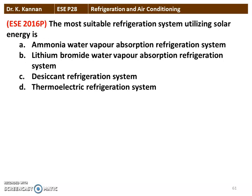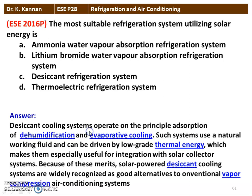Next question: The most suitable refrigeration system utilizing solar energy is — ammonia-water vapor absorption, lithium bromide-water vapor absorption, desiccant refrigeration, or thermoelectric refrigeration? The correct answer is the desiccant refrigeration system. Desiccant cooling operates on principles of absorption, dehumidification, and evaporative cooling, uses natural working fluids, and can be driven by low-grade thermal energy, making it ideal for integration with solar collector systems.